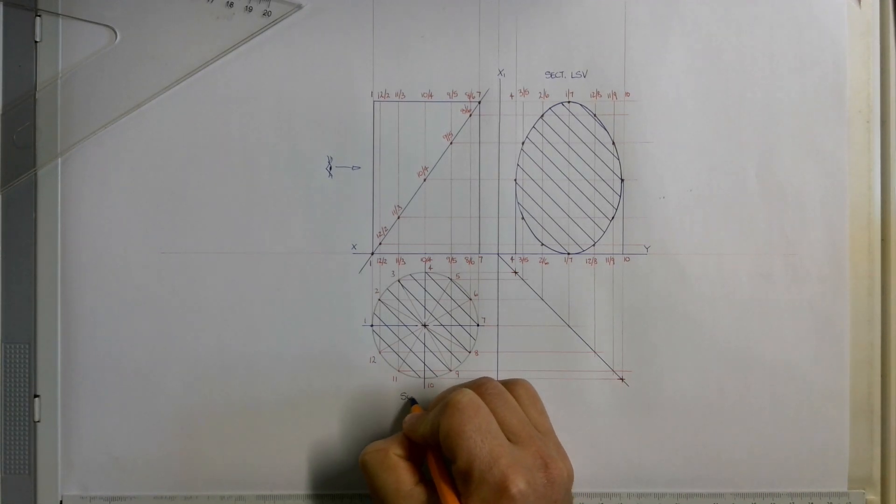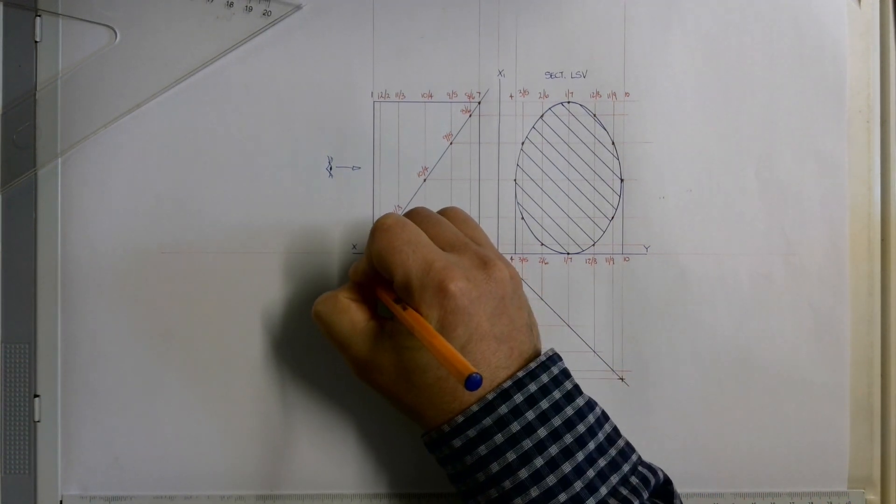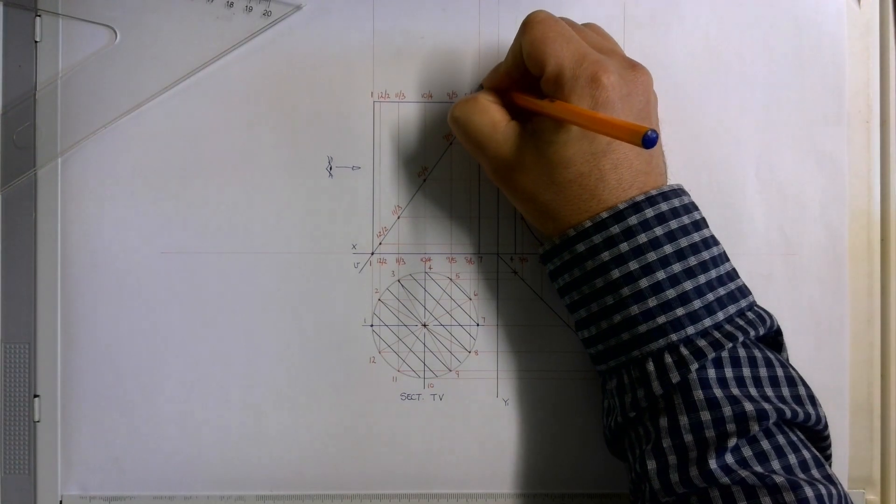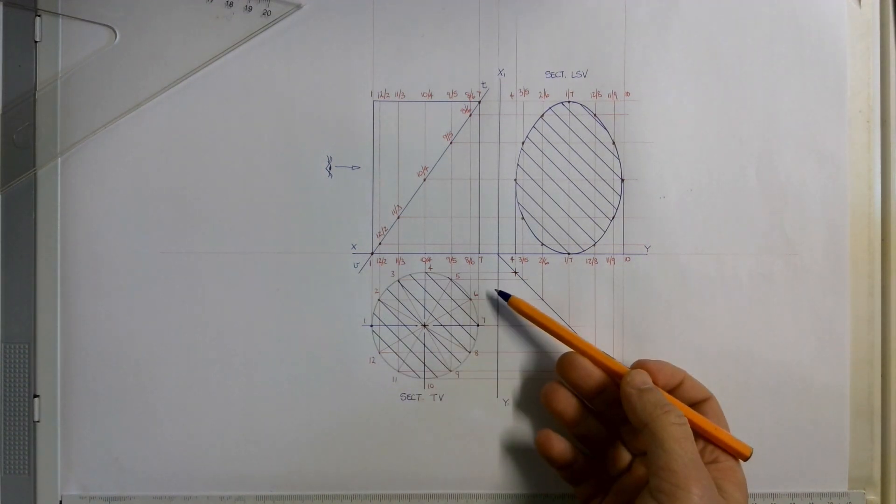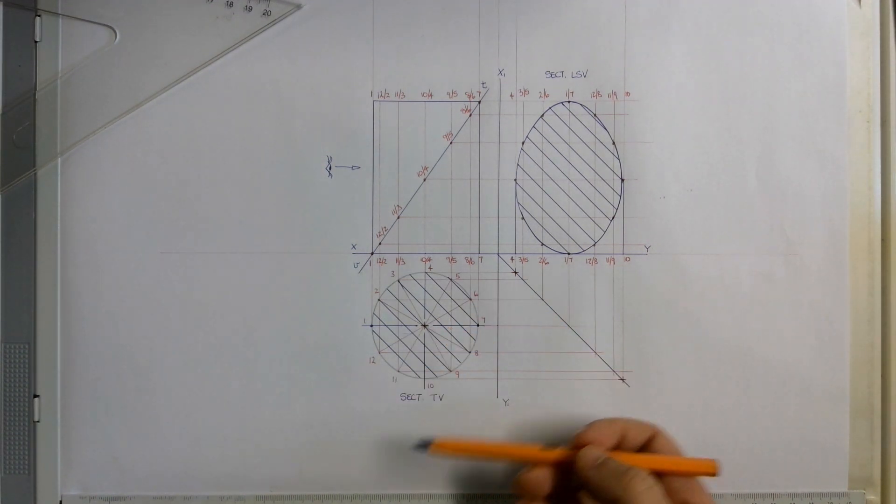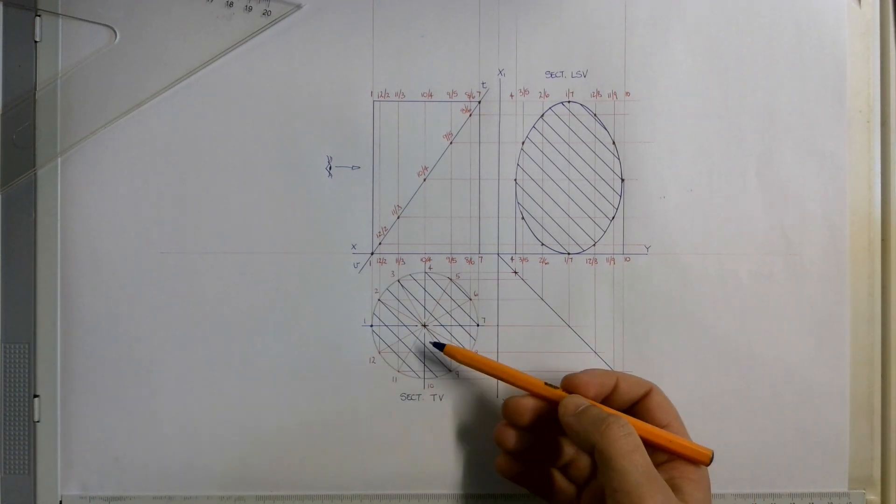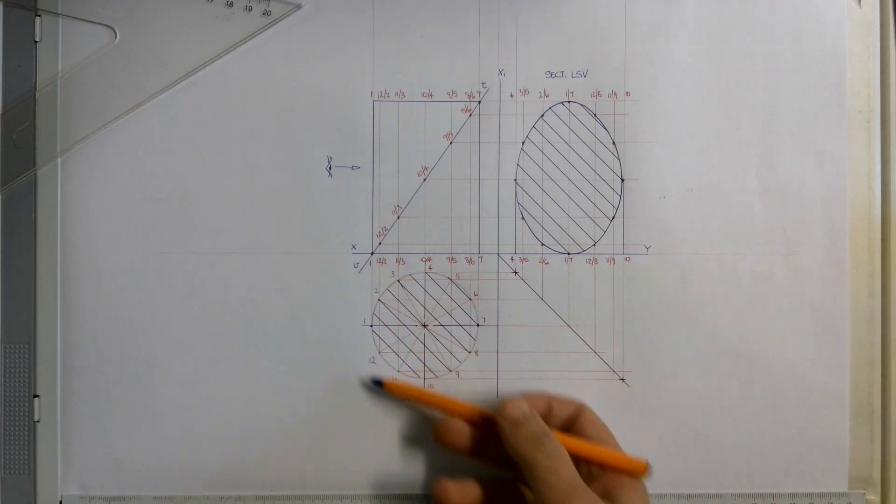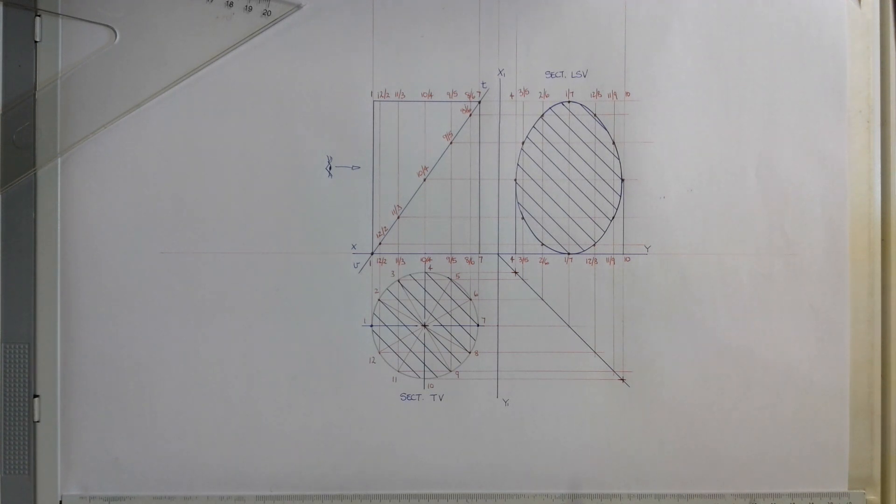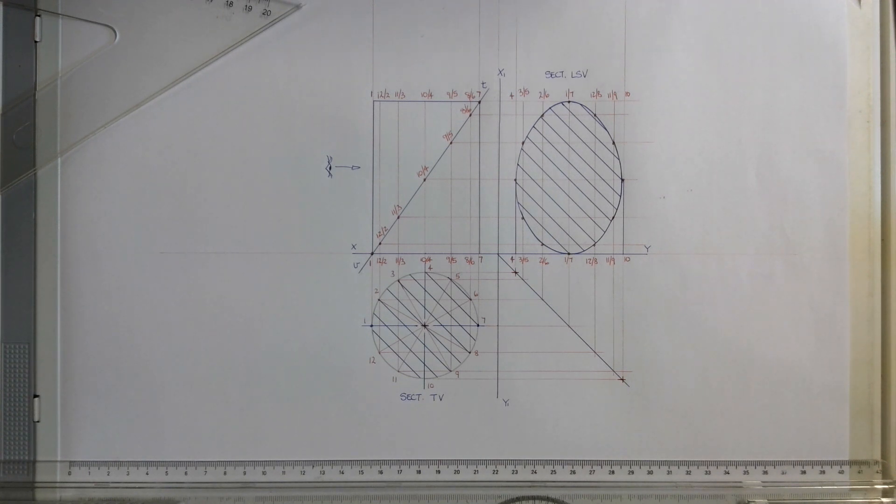I'm going to label this one a sectional top view. This is the vertical trace VT because it's in the vertical plane. If I had a cutting plane through my top view and an indicator in my top view, it'll be called a horizontal trace because it's in my horizontal plane. I think that wraps it up for you nicely. I hope you guys have enjoyed the video.